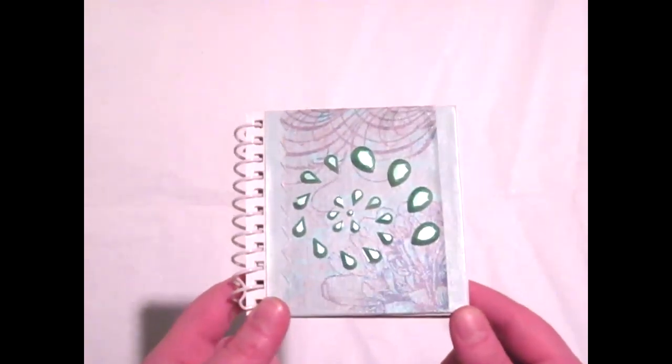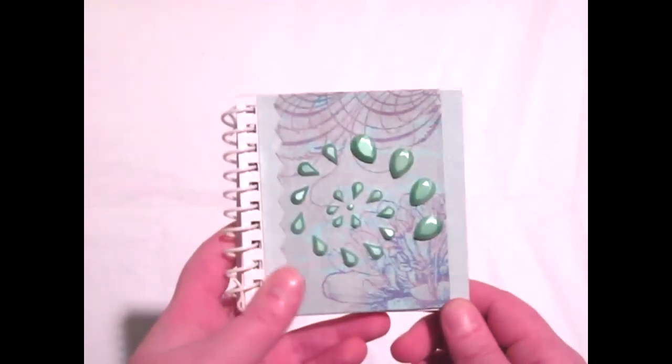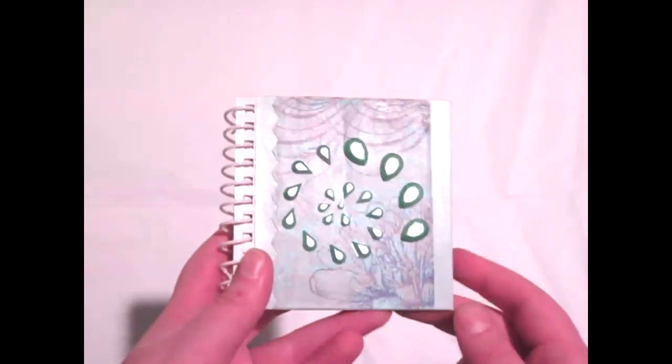But I decided to use up the scraps that came from the previous project I was working on. That's the Seaside Apothecary Journal, so this one came after that and I call this the Coconut Conch Book.